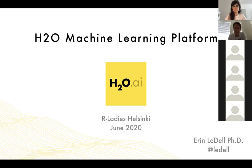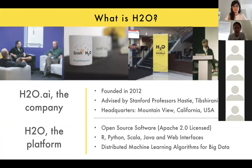First I'm going to tell you a little bit about what H2O is. H2O.ai is the name of the company I work at, and H2O is the name of the software we create. We actually have about five or six different software tools now, but H2O is still kind of the main one. The company has been around since 2012 and I've been working there since 2015.